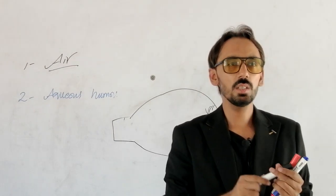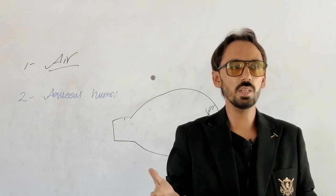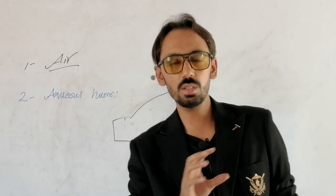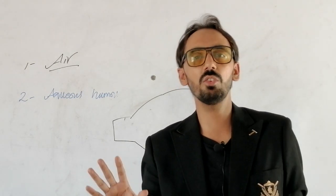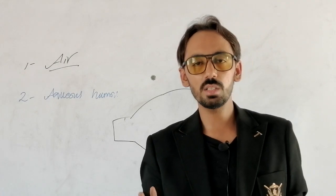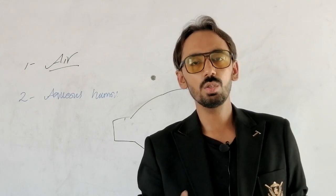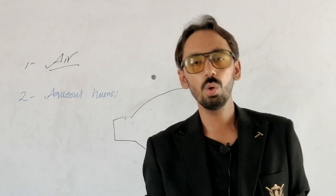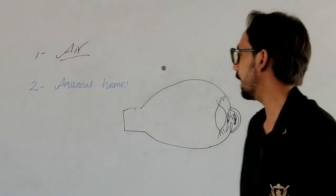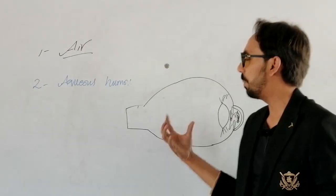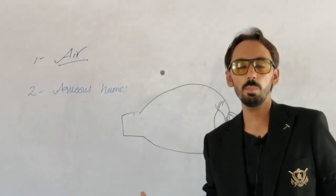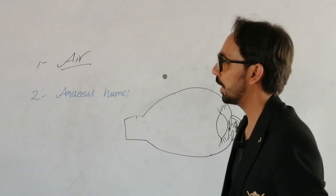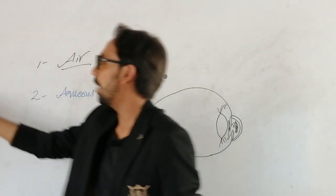As the cornea is a totally transparent structure, there is no blood supply and no lymphatics for the cornea. This completes a brief introduction about the fibrous layer, which is the first layer of the eyeball.